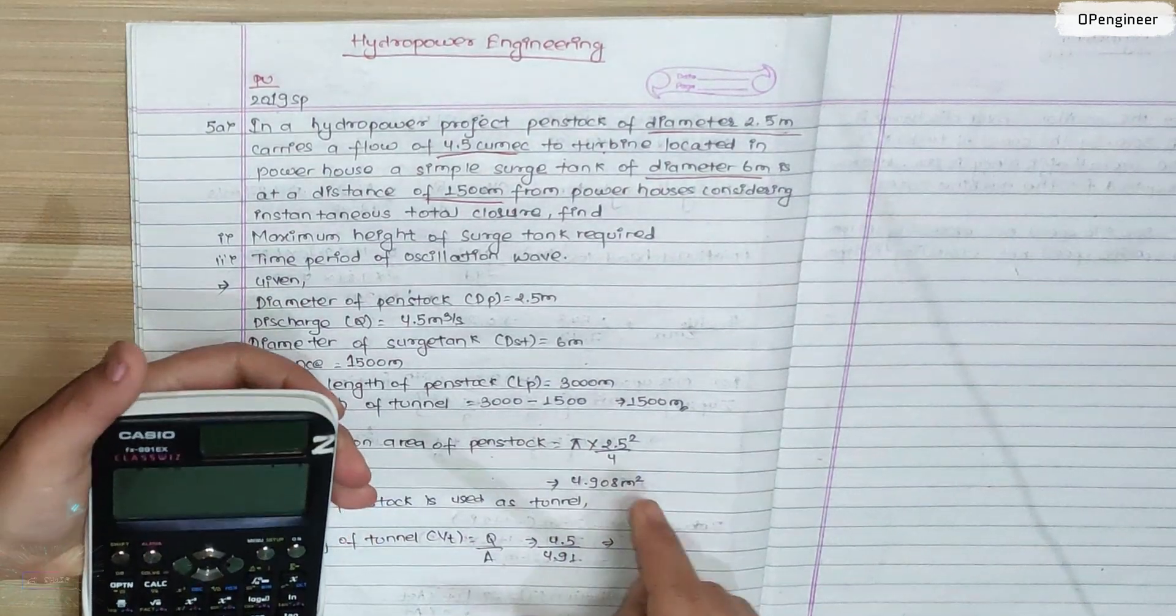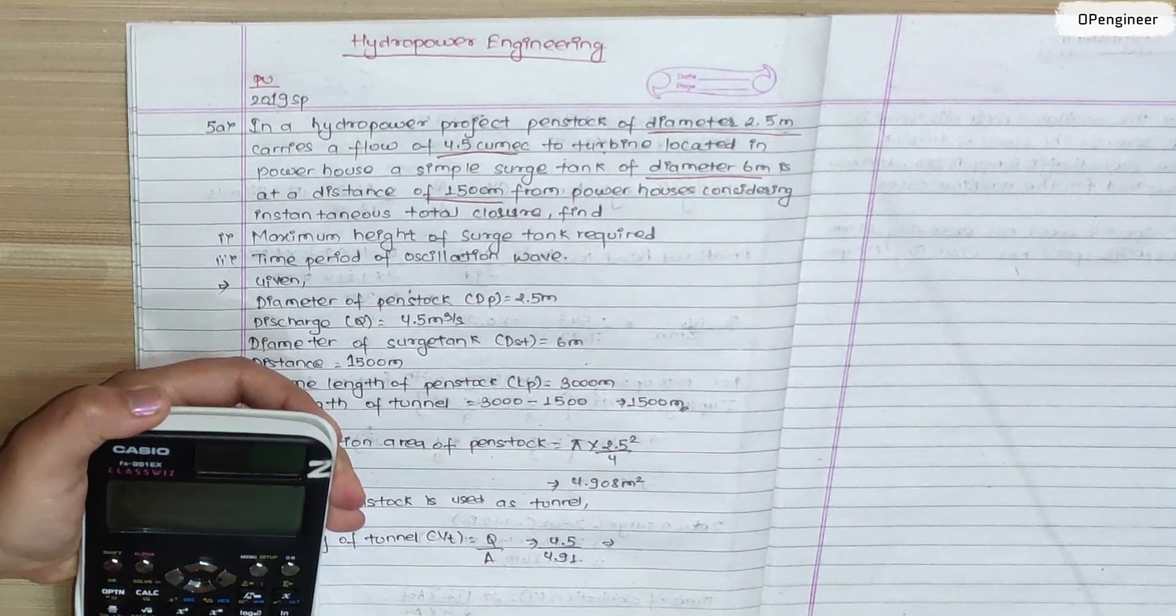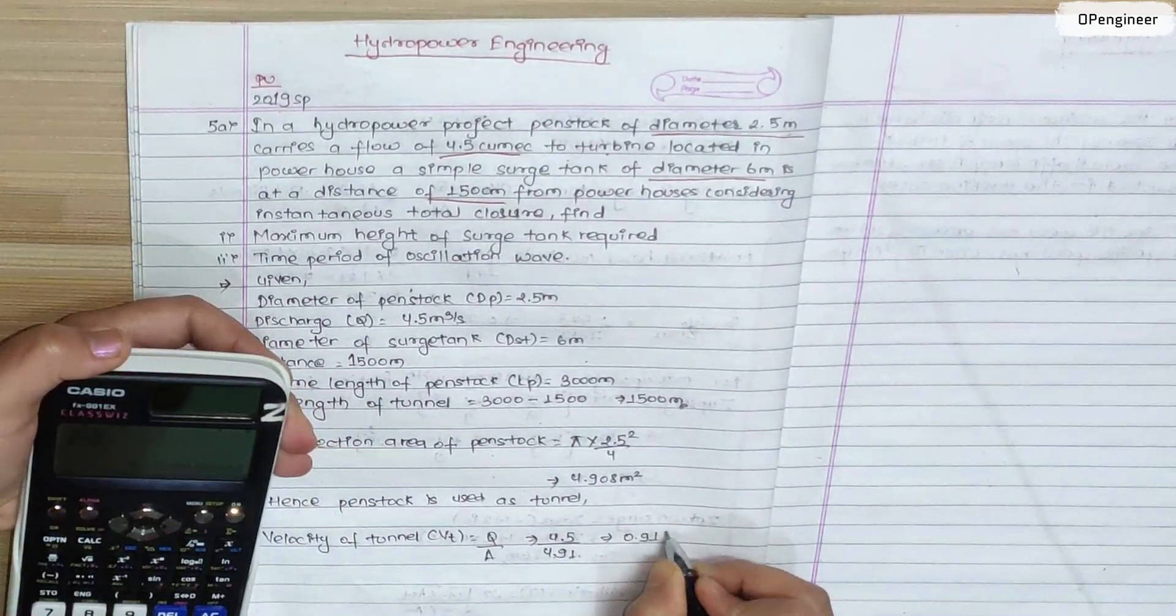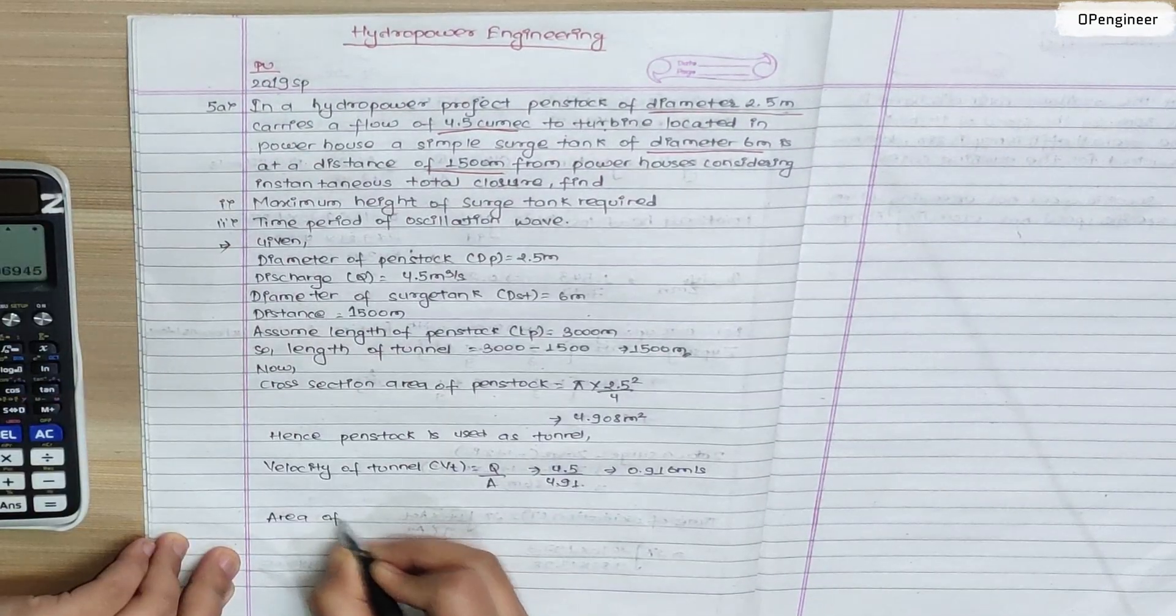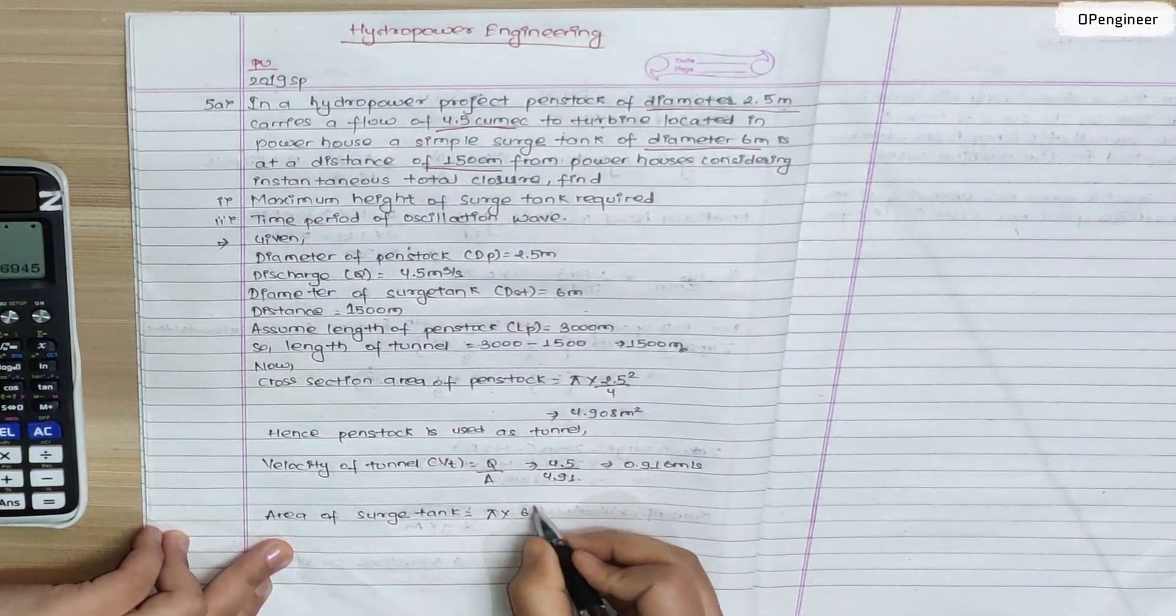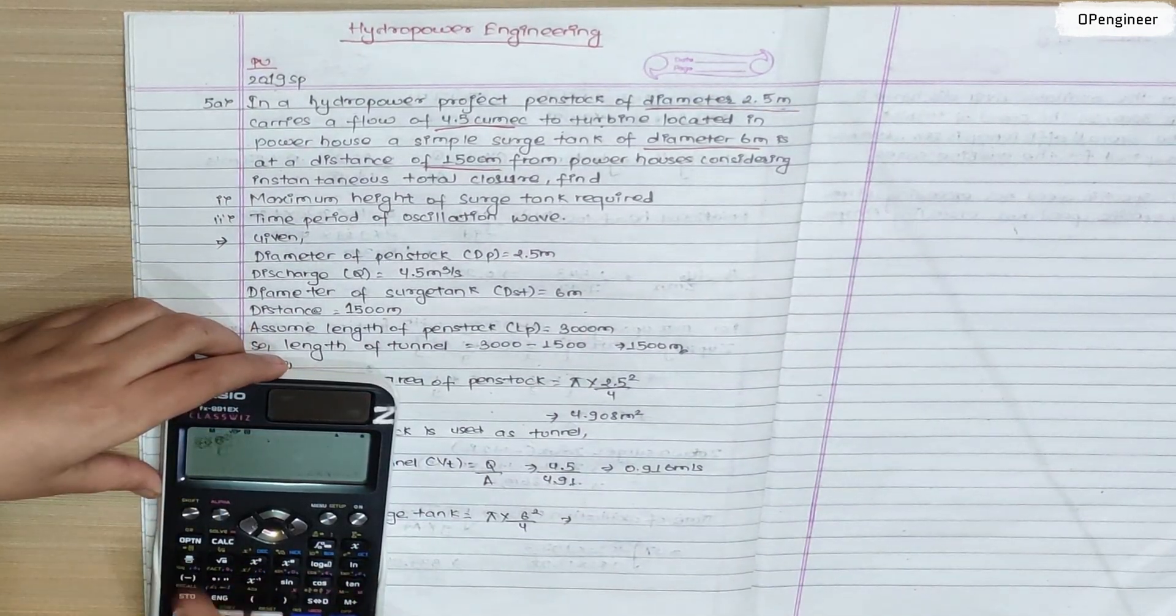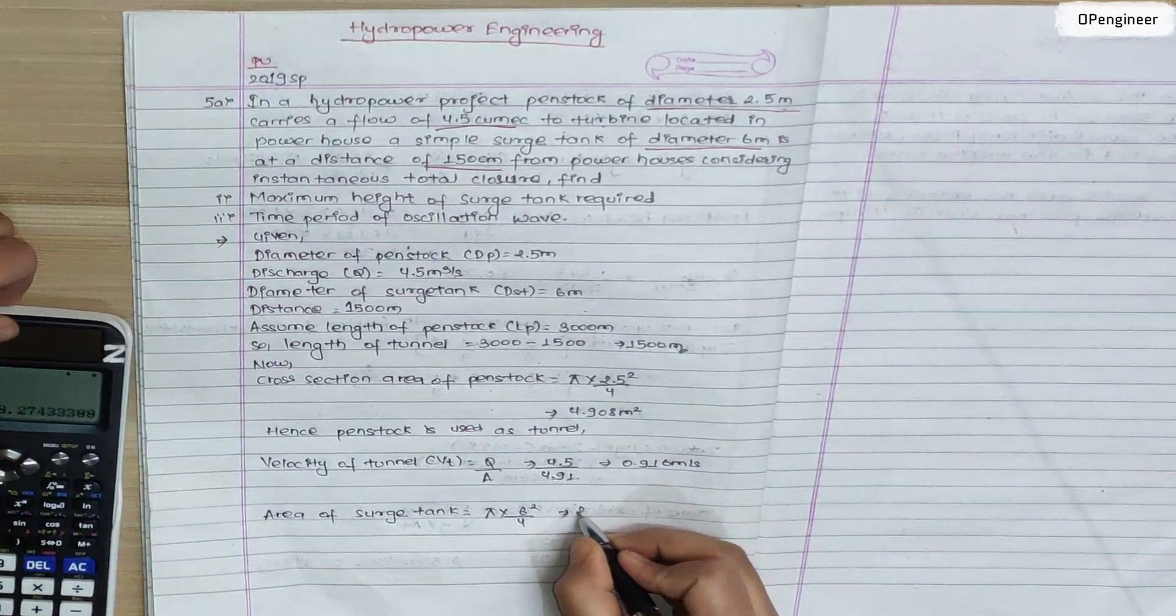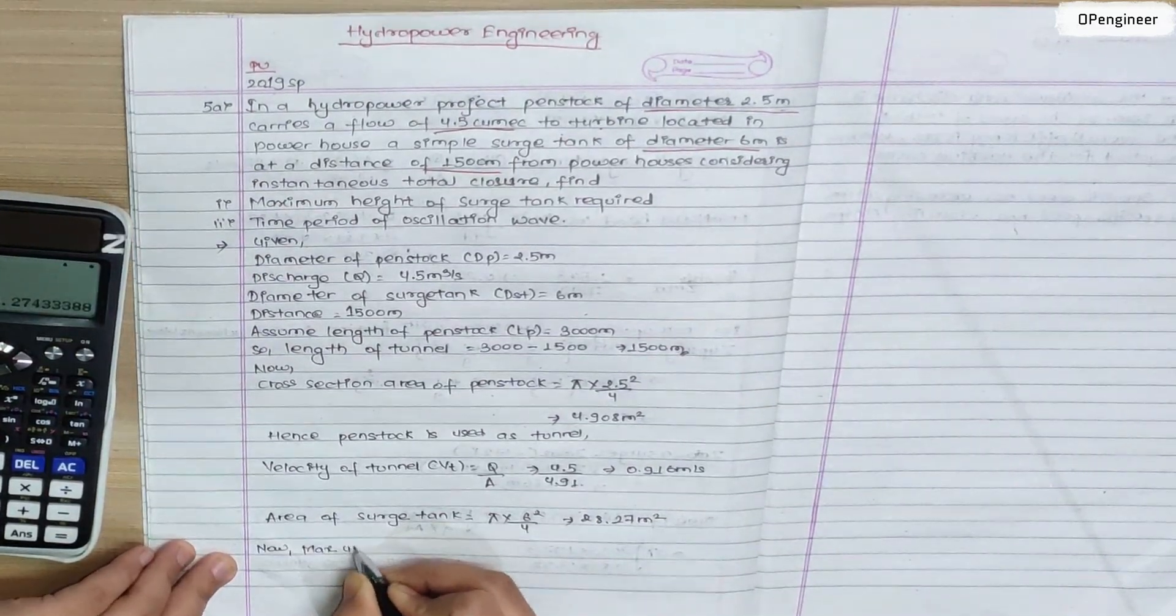So 4.5 by 4.91, you calculate that is 0.916 meter per second. Now, area of surge tank: pi into diameter of surge tank 6 meters squared by 4. So pi into 6 squared by 4, you calculate that area of surge tank 28.27 meter square.